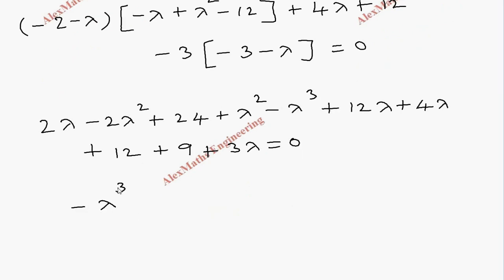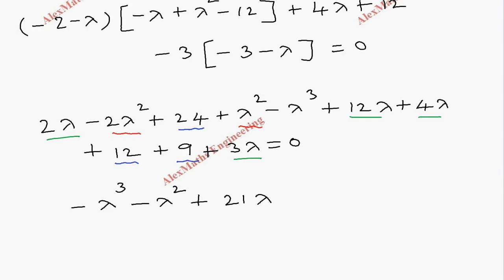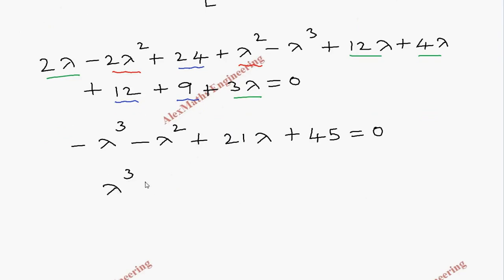Now we rearrange. Writing minus lambda cubed first, then grouping all lambda squared terms gives minus lambda squared. Grouping all lambda terms: 2 lambda, 12 lambda, 4 lambda, and 3 lambda — all positive — gives 21 lambda. Then grouping all constants: 24 plus 12 plus 9 gives plus 45, all equal to 0.